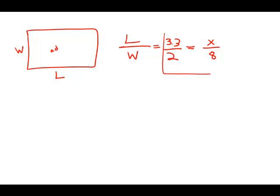So I'm going to take this equation and multiply both sides by 8 so that I isolate the x. I get 8 times 3.3 over 2 equals x.